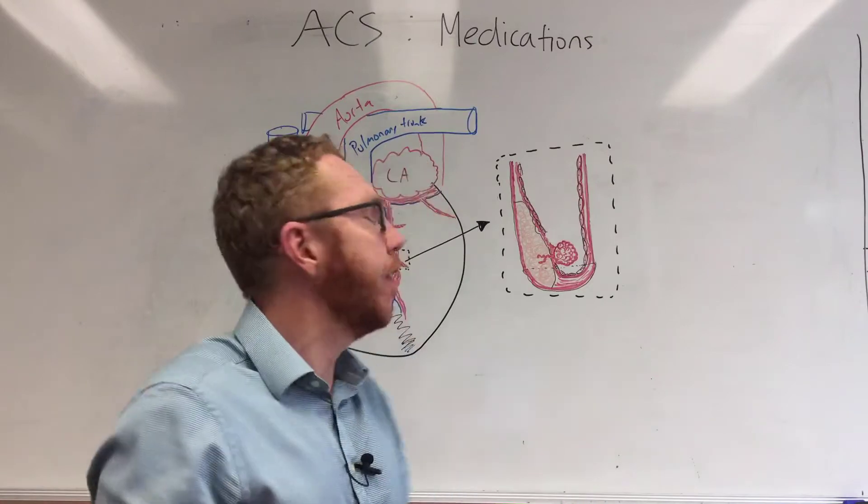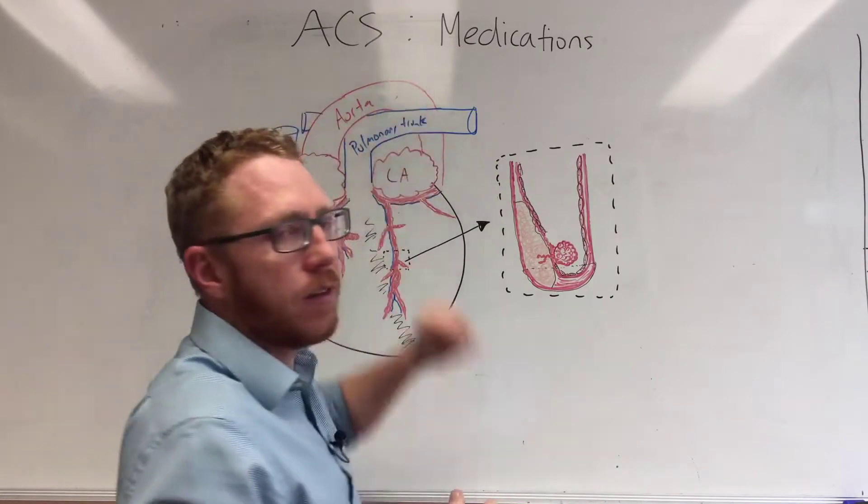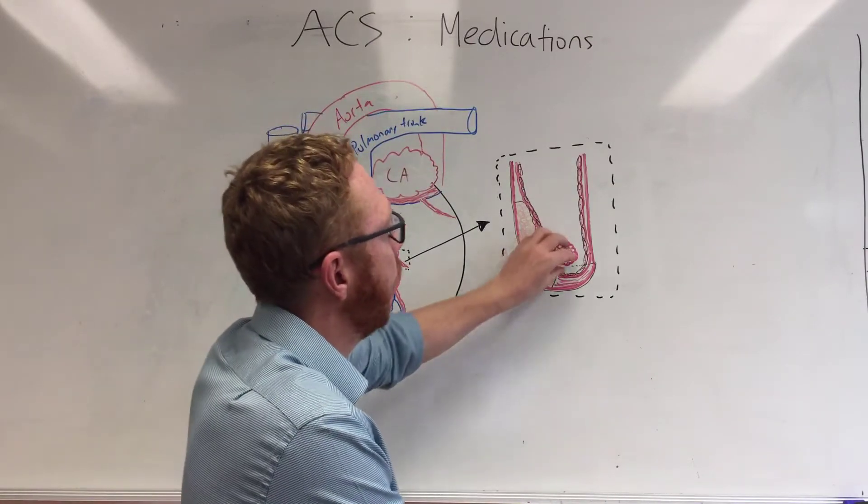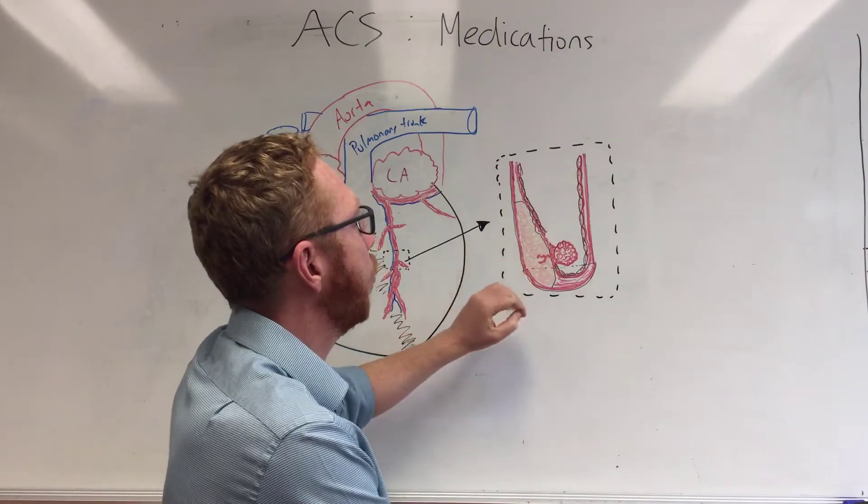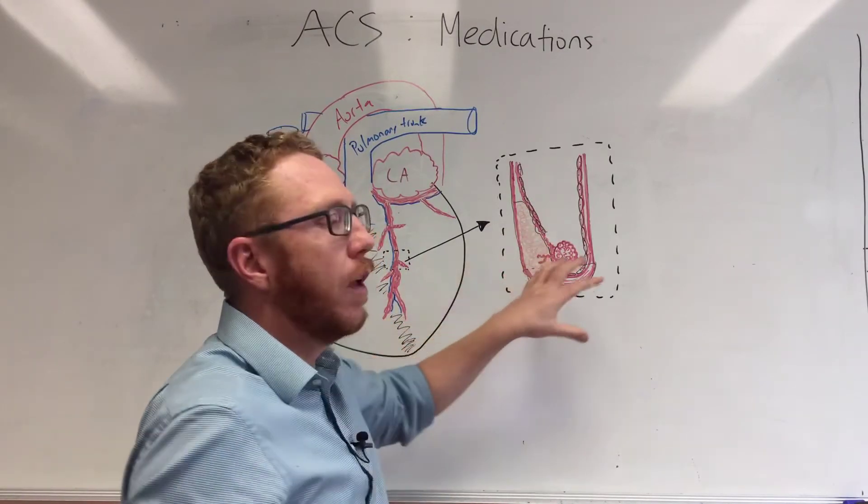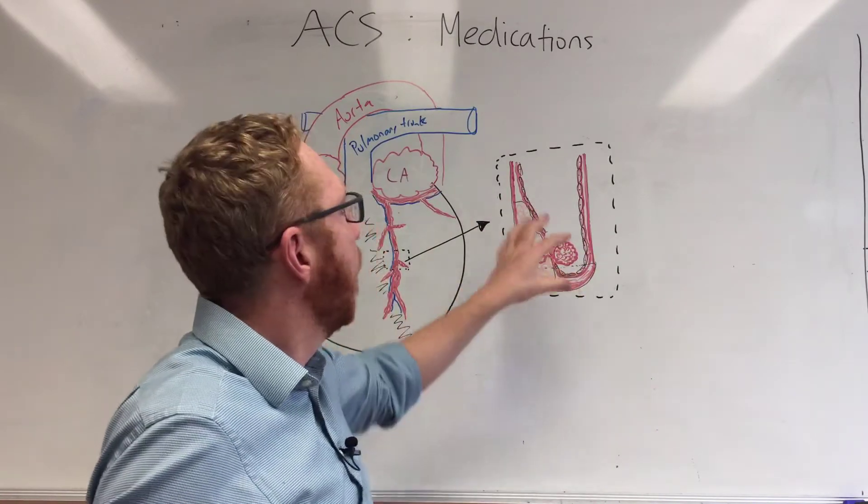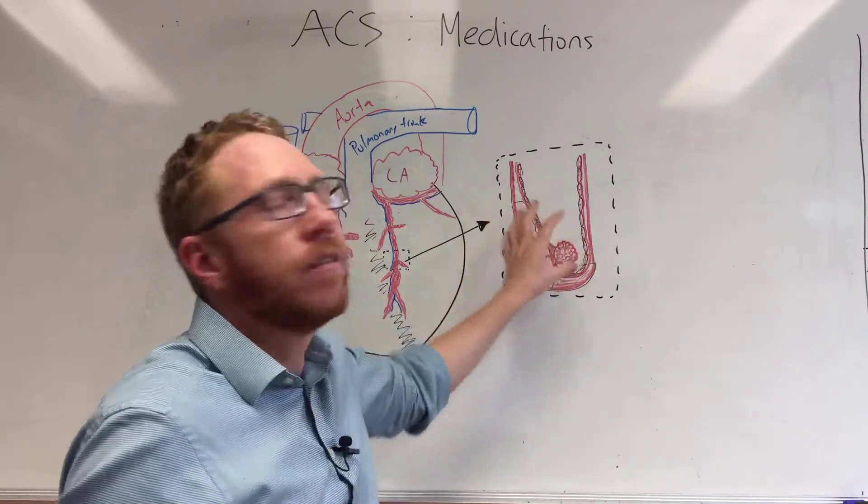So when we look at aspirin, aspirin is a very useful drug in ACS. Its effect is to stop further platelet aggregation in the area where we have a possible exposure to the plaque. So it would be used in preventing further platelets being aggregated in the vessel.